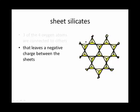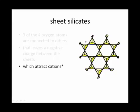So the sheet silicates have three out of every four oxygen atoms connected to others. But that still leaves a negative charge between the sheets, and that's why they will attract cations as well as water.